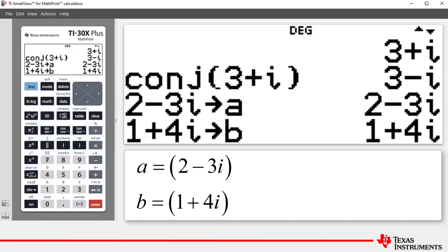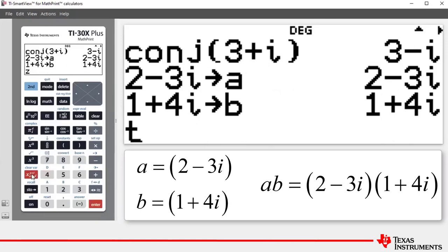Now we can calculate the product a times b. Press our variable key one at a time until we get to a, multiply by, press the variable key again until we get to b, press enter. That's showing us that the product of the two complex numbers is 14 plus 5i.